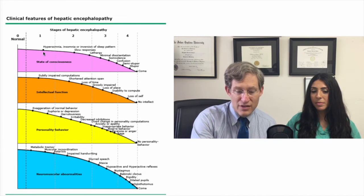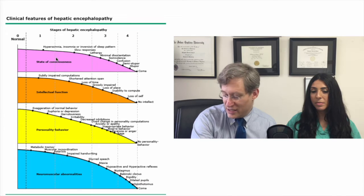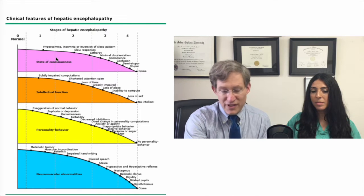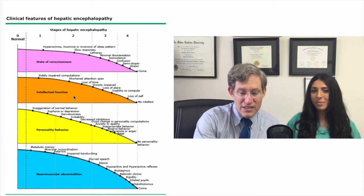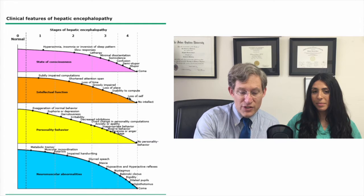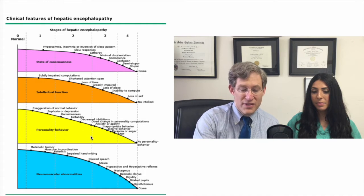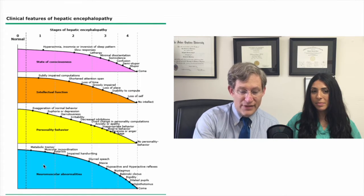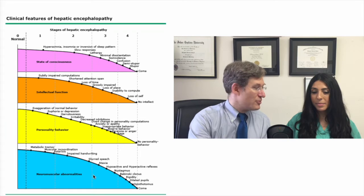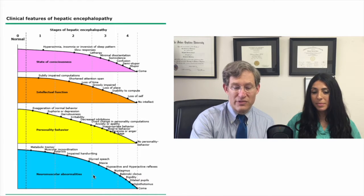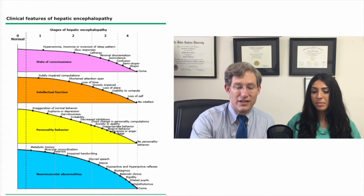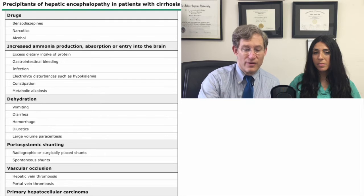This slide nicely summarizes the spectrum of patients who have hepatic encephalopathy — looking at the state of consciousness over time, the decrease in intellectual function, problems with personality and behavior, and neuromuscular abnormalities. We really liked that the change over time shows it isn't strictly grades 1, 2, 3, and 4.